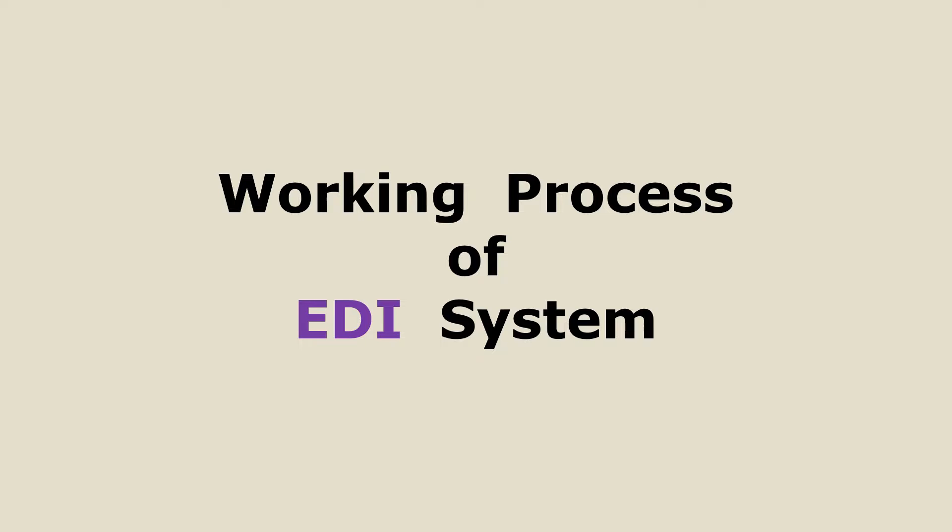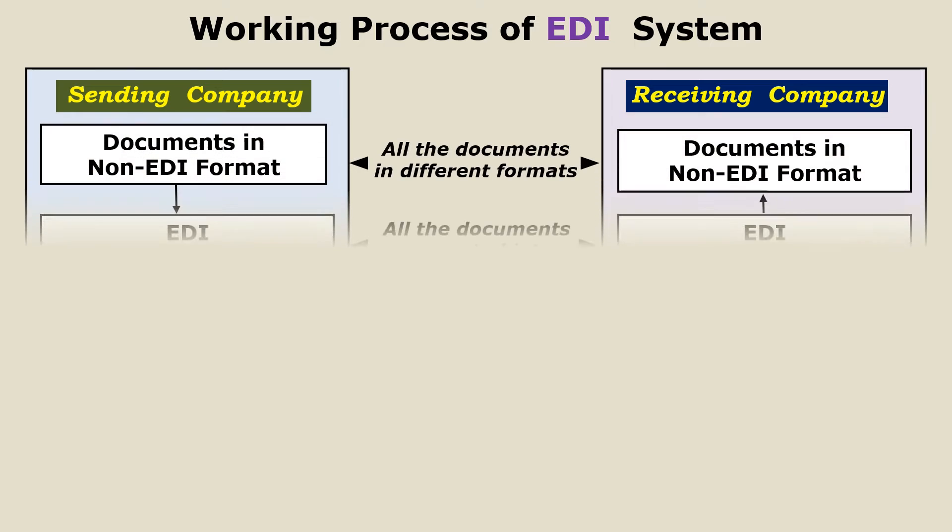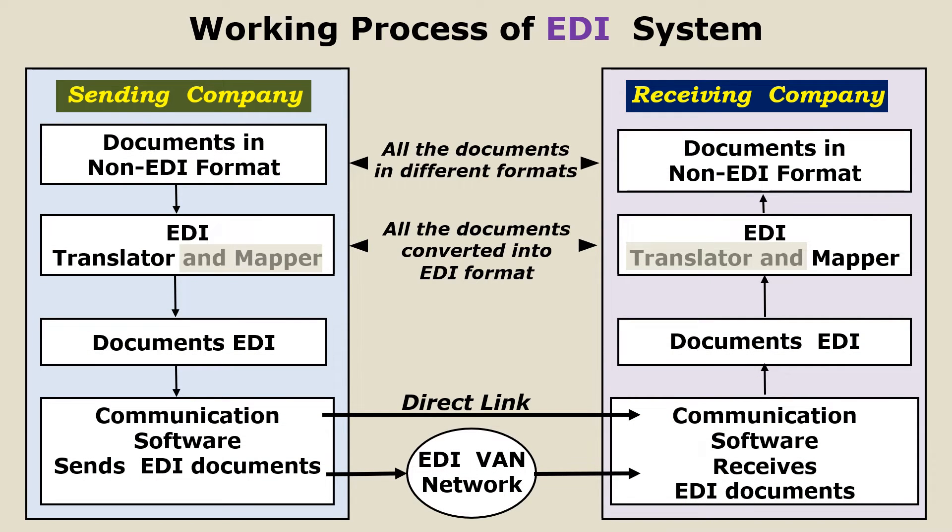Now let us understand how EDI works — the working process of the EDI system. In order to understand this, let us assume two companies. There is one sending company which sends the business documents and another receiving company which receives them. We will also identify what are all the components involved in the working of the EDI system. So this is the complete picture of the working process of the EDI system.